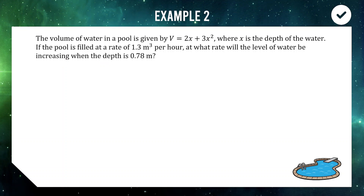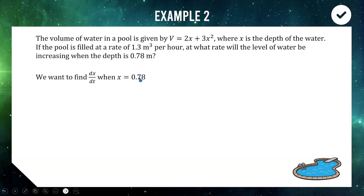At what rate will the water level be increasing when the depth is 0.78? We need to identify what we're being asked: we're trying to find the rate at which the water level is increasing. The water level is x, so we're trying to find dx/dt when the depth equals 0.78. We haven't been given a relationship between x and t — only between x and V — so we split the derivative and fill in the gaps with the related variable, which is volume: dx/dt = (dx/dV) × (dV/dt).